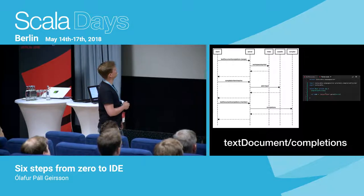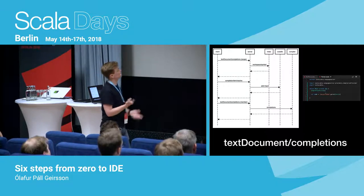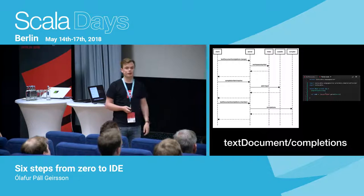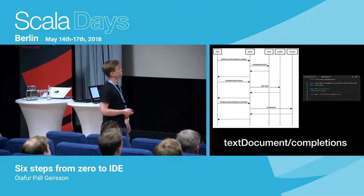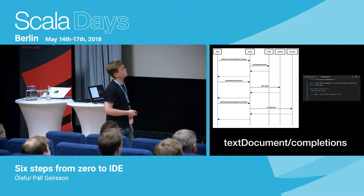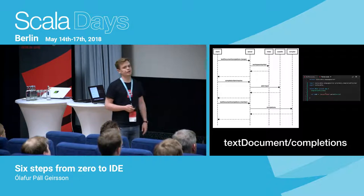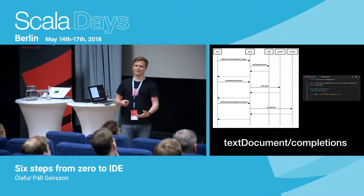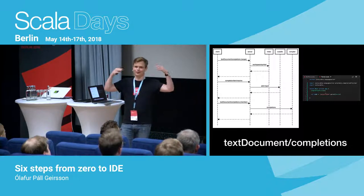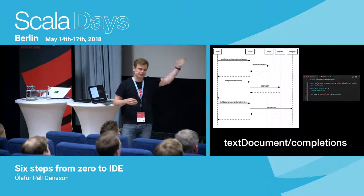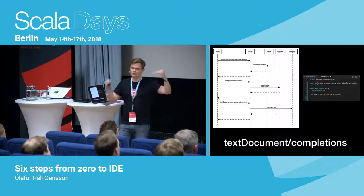But then as soon as we do a dot, the editor does another completion request, which we then pass on to the Scala compiler — because that's a member lookup, and that's pretty hard to do. So that's where the presentation compiler is used, and it responds. So next time you go into IntelliJ and start typing all of these things, it's sort of mind-blowing to think about all of that. IntelliJ has a completely different architecture, but there's quite a lot of stuff going on.